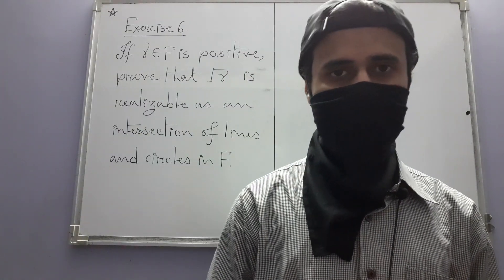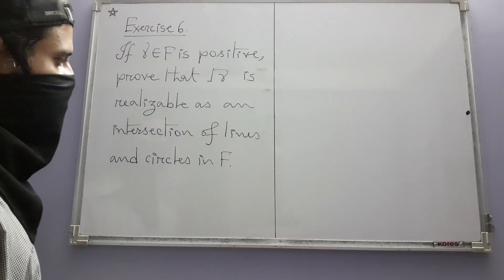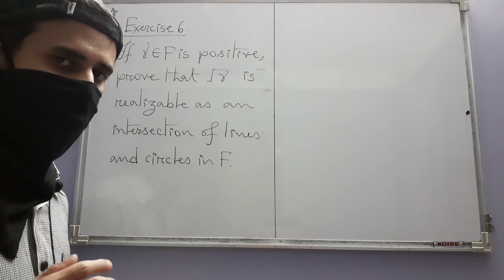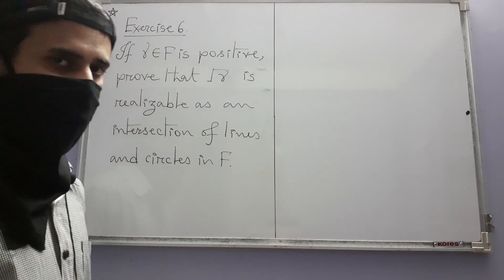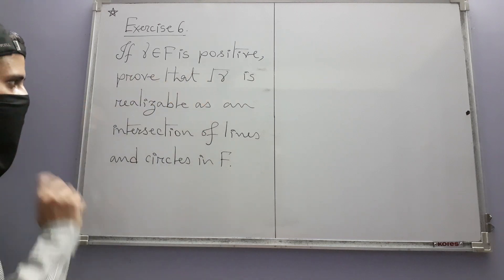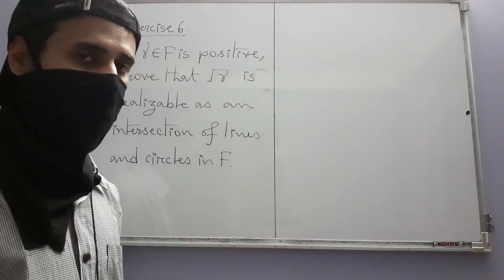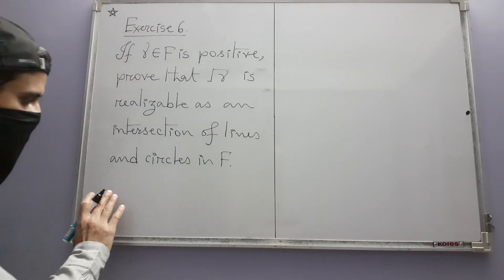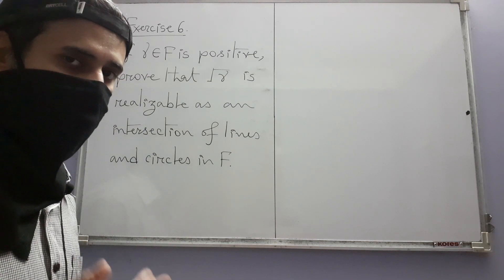Let us next see exercise six. Here, just like before, F is a subfield of the field of real numbers and gamma is an element in F that is a positive real number. We have to prove that root gamma is realizable as an intersection of lines and circles in F. Let's start the solution by writing down clearly what that means and what it is that we have to prove.